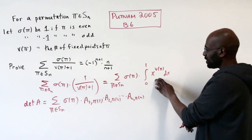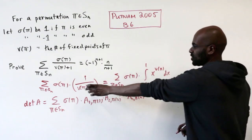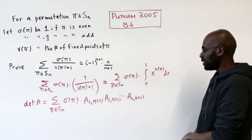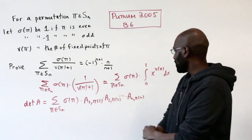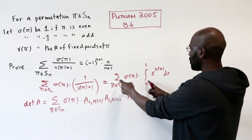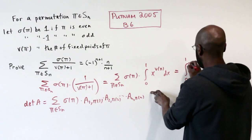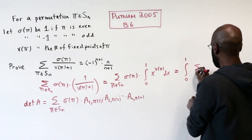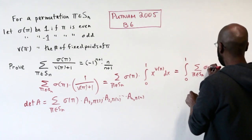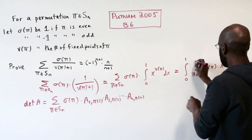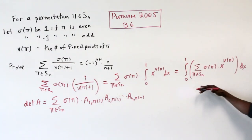When we integrate this, we get x to the ν(π) plus 1 times this quantity, and evaluating from 0 to 1, we're left with 1 multiplied by this quantity. Now we can switch the integral and the sum. Integration is additive, so this is the sum over π in Sn of σ(π) times x to the ν(π), dx. We're interested in integrating this quantity with respect to x.